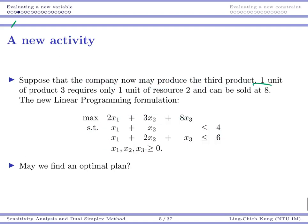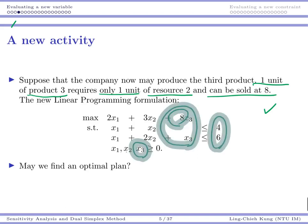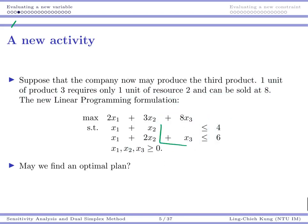One unit of product 3 requires only 1 unit of resource 2 and can be sold at $8. The new linear programming formulation becomes this one. The resource limitation is still there. You now have a new activity, production quantity should be non-negative. The price for each unit of product 3 is $8, which seems very attractive.